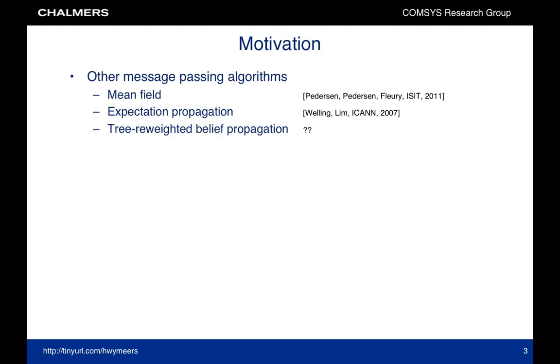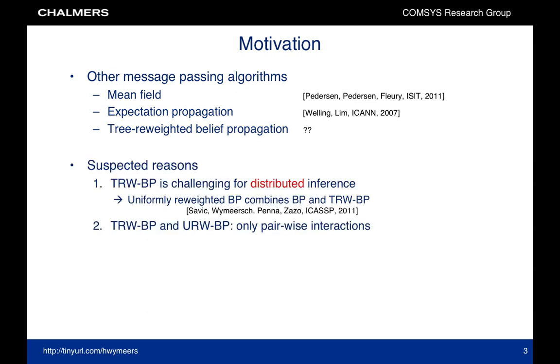We looked into other message passing methods and found that mean field and expectation propagation have been applied to the navigation problem but do not address the problem of overconfidence. For another message passing method, tree-weighted belief propagation, we could not find any papers in the field of navigation. We believe this is due to two reasons. First of all, it is challenging to apply tree-weighted belief propagation to a distributed setting due to the use of so-called edge appearance probabilities. We address this problem through a variation of tree-weighted belief propagation called uniformly-weighted belief propagation, which we presented in ICASP earlier this year.